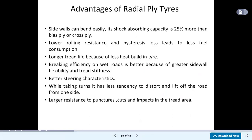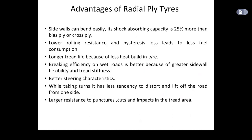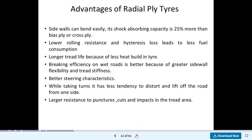The advantages of radial ply tyres: sidewalls can bend easily. Shock absorbing capacity is 25% more than bias ply or cross ply. Lower rolling resistance and hysteresis loss leads to less fuel consumption. Longer tread life because of less heat build-up in the tyre. Braking efficiency on wet roads is better because of greater sidewall flexibility and tread stiffness. Better steering characteristics — while taking turns, it has less tendency to distort and lift off the road from one side. Larger resistance to puncture, cuts and impacts in the tread area.